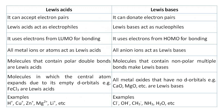Let's discuss the differences between Lewis acids and Lewis bases. Lewis acids can accept electron pairs, but Lewis bases can donate electron pairs. Lewis acids act as electrophiles, but Lewis bases act as nucleophiles. Lewis acids use electrons from LUMO for bonding, but Lewis bases use electrons from HOMO for bonding.